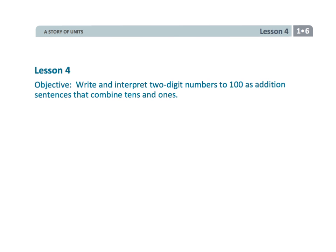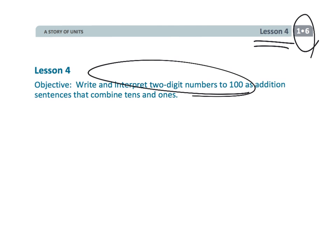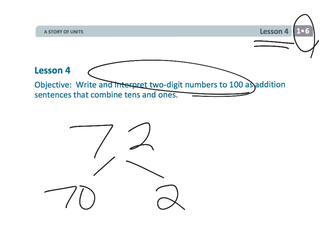And that wraps up a fun one — first grade, module 6, lesson 4. We are taking those two-digit numbers and breaking them apart into addition sentences — in this case, the tens plus the ones. So you've got, like, 70 plus 2 in this case.